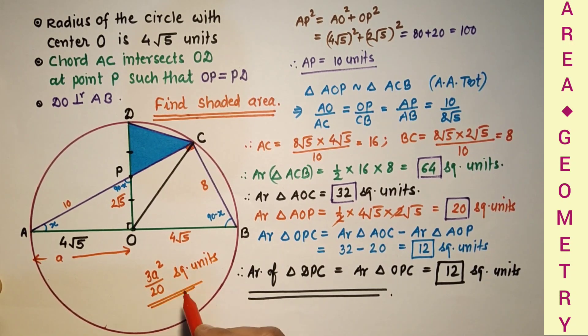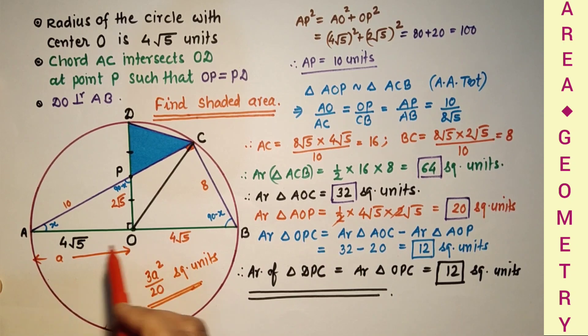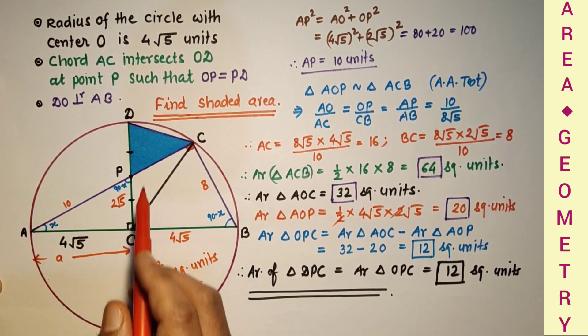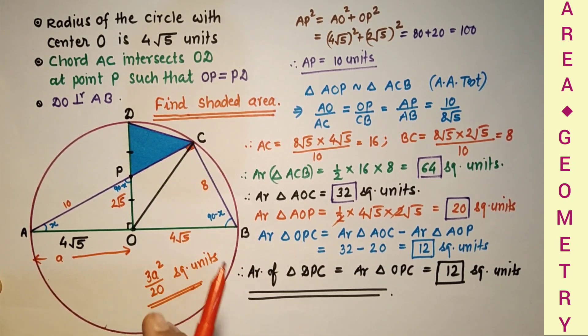We can calculate and we can generalize this. For radius a, area of the shaded portion 3a² over 20.